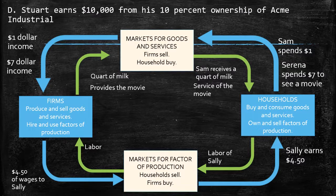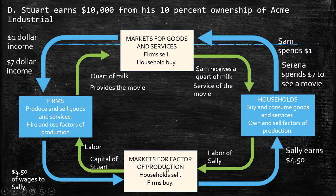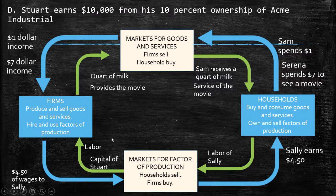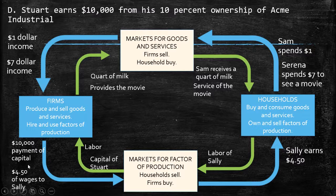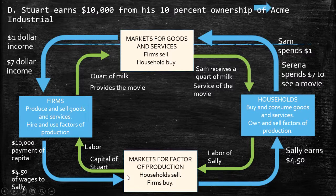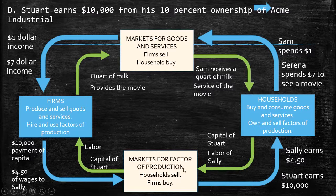The last activity: Stuart earns $10,000 from his 10% ownership of Acme Industrial. Here we are talking about the market for factors of production — specifically capital, not land or labor. Stuart's capital is received by the firm. In return, they pay for that capital: $10,000 corresponding to the 10% ownership of Acme Industrial. So Acme Industrial pays $10,000 in the outer loop — the dollar flow. Stuart provides capital throughout the market for factors of production.